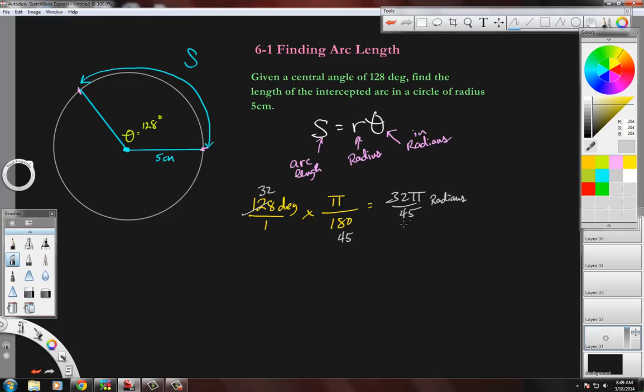You've got to convert that to radians in order to do this. Now to finish this problem off, we start with our formula r theta equals S. We're finding S so we don't know what that is. We know that our radius is five centimeters, so it's going to be five times 32 pi over 45.